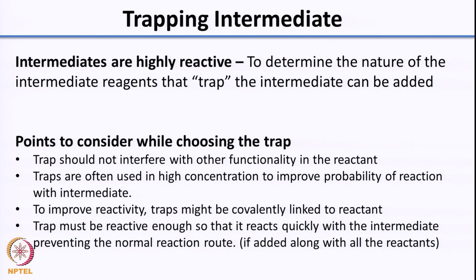So just a quick recap: intermediates are very very reactive, so it is very difficult for you to see the intermediate. What is done is you add an external reagent or change your reactant such that you can trap the intermediate. By trapping the intermediate into a very stable state, you can actually observe the intermediate. This is a very clever trick that has been used to identify what the nature of the intermediate is.